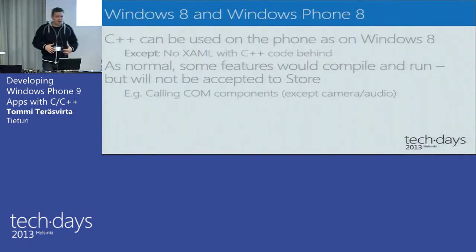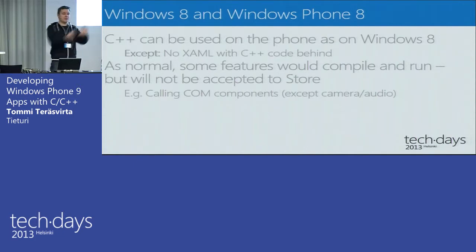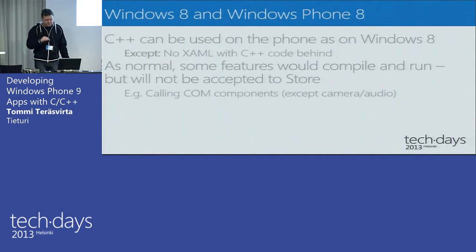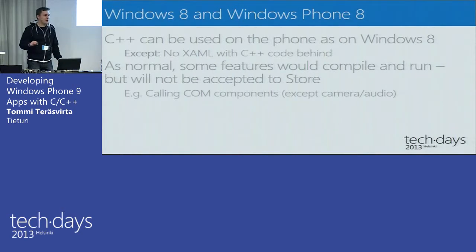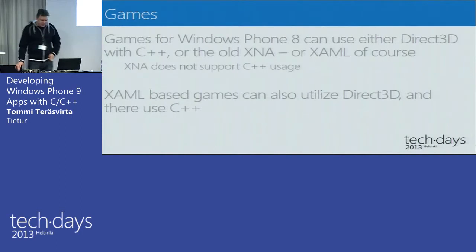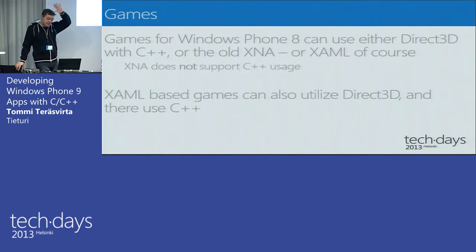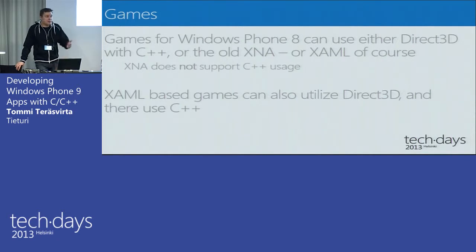If you have company-specific line-of-business apps, with Windows Phone Enterprise you can do certain things you can't do if publishing through the public Windows Phone store. Games: XNA means no C++ usage. XAML — you could do a XAML-based app just like before; in that sense there's no difference whatsoever.